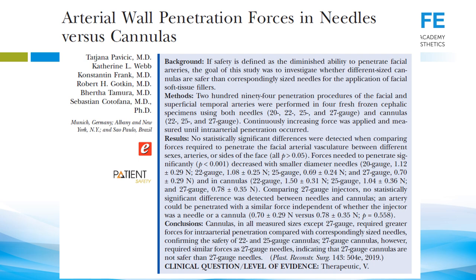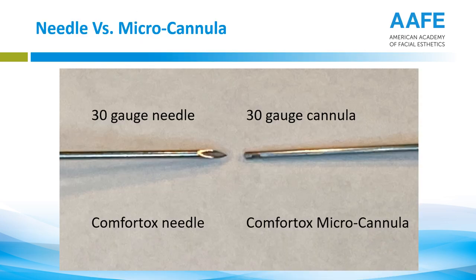Some of you are trained in micro cannulas, some are not. A cannula is a tool, just like a needle, for delivering filler. Let's do some critical thinking and test it out for yourself. We use the Comfort Tox micro cannula — it was not the one tested in that study. There's a 30 gauge Comfort Tox needle and a Comfort Tox micro cannula. You can see for yourself how blunt it is. Let's do two tests on this.